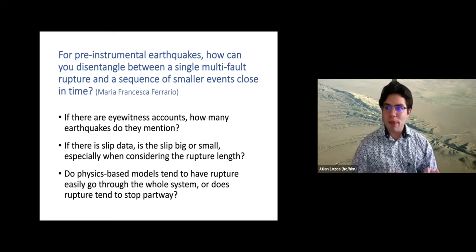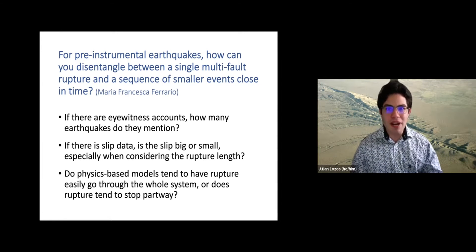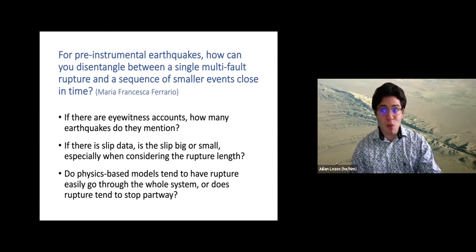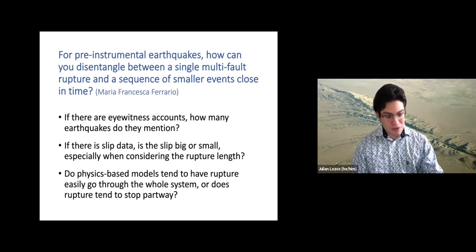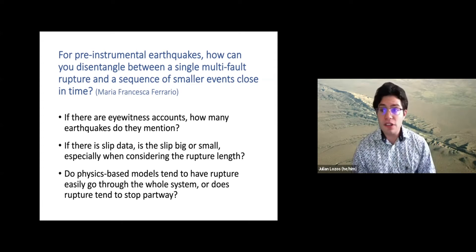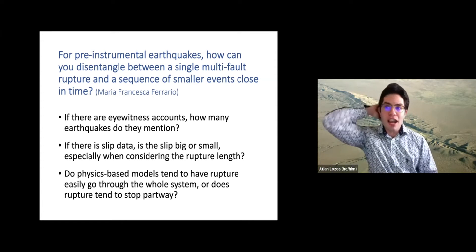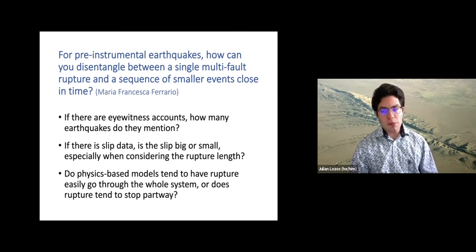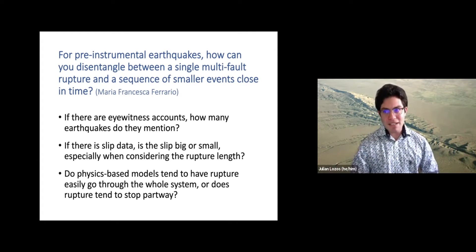This is a balance of what the records say and what does the physics say. If there are eyewitness accounts, how many earthquakes do they describe? If they really only talk about one earthquake that lasts a really long time and did a whole bunch of damage, the underlying hypothesis might be that it was probably one bigger earthquake. But if they describe multiple shocks of similar level or a series of earthquakes, or even a couple of years apart, looking at what people have to say about what happened is a really good baseline check.